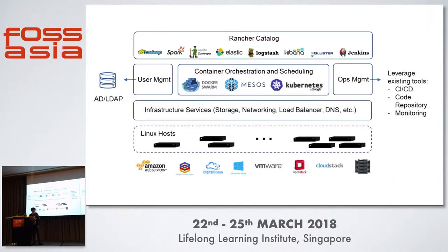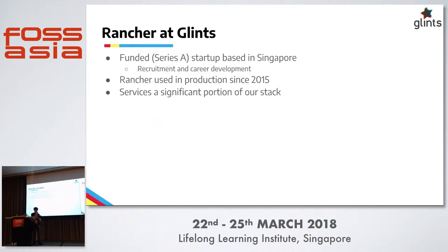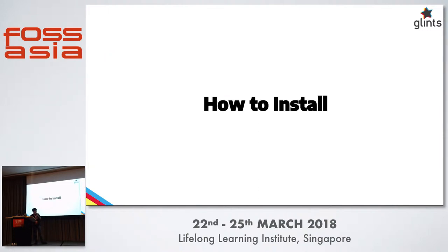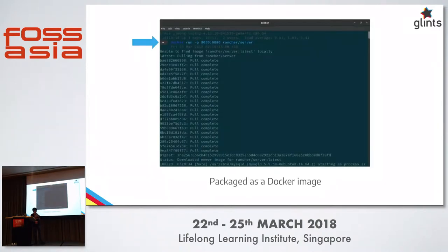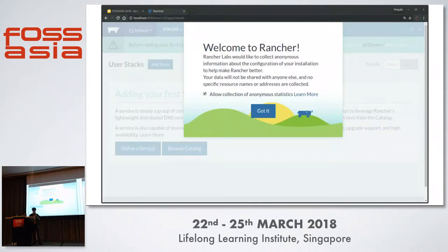This is the Rancher stack, which you can probably find online. Rancher is actually quite easy to install — it's packaged as a Docker image, so you just Docker run it on whatever provider you want, and you get a nice user interface, which you usually wouldn't get with a stock deployment of Kubernetes or something else.